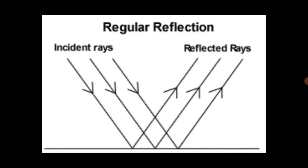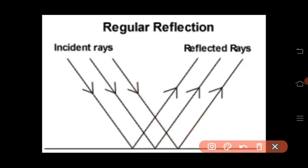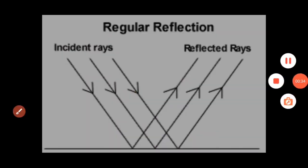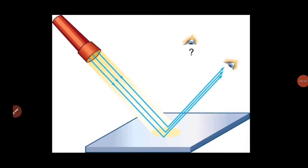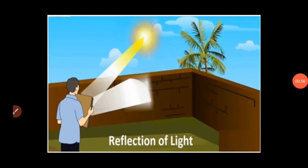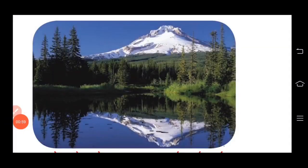In this picture, the incident ray angle is equal to the reflected ray angle. When the angle of incidence and the angle of reflection are equal, it gives a clear image. This type of reflection is called regular reflection or specular reflection. Examples include reflection of light by a plane mirror and reflection of light from the surface of still water.